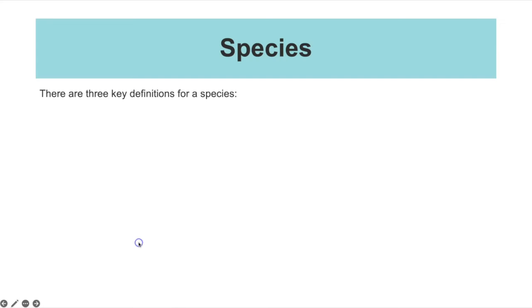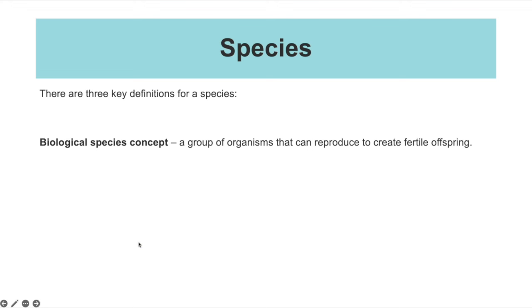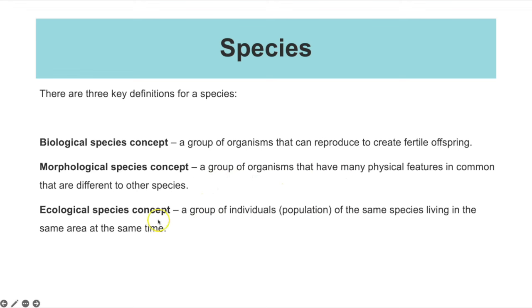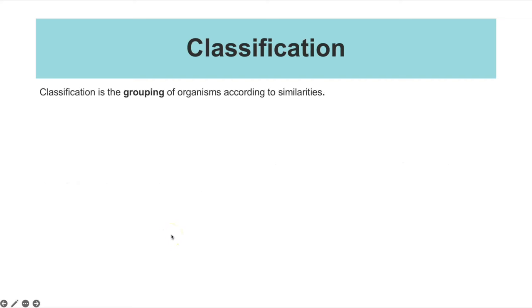There are different ways to define a species. You could have the biological species concept, which is a group of organisms that can reproduce to create fertile offspring. The morphological species concept, which is a group of organisms that may have physical features in common that are different to other species. Or the ecological species concept, which is a group of individuals of the same species living in the same area at the same time. Classification is the grouping of organisms according to their similarities.